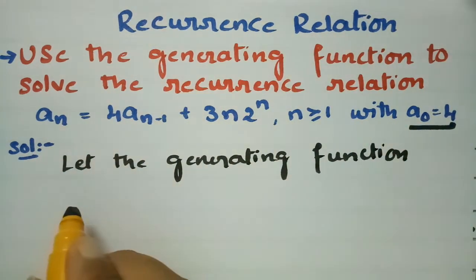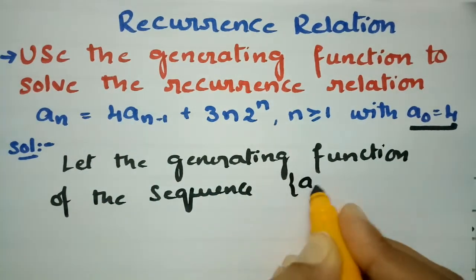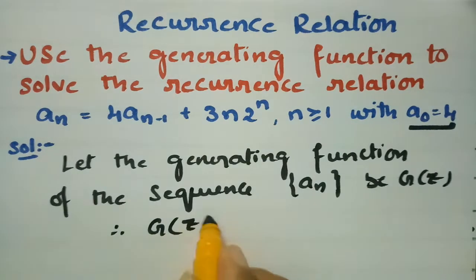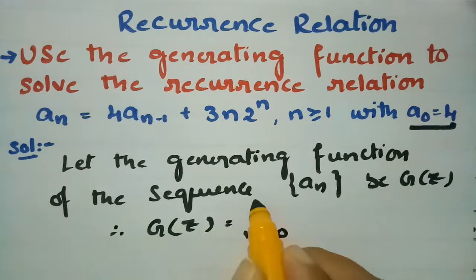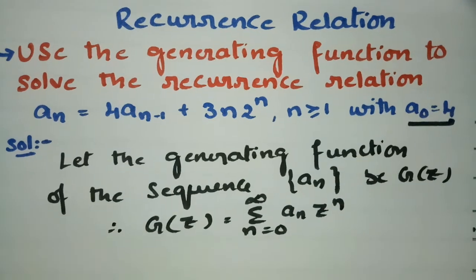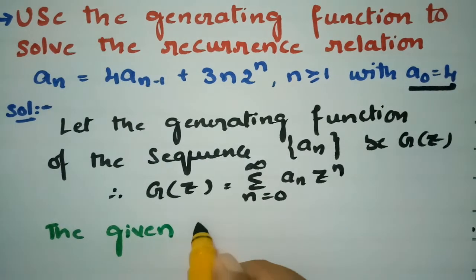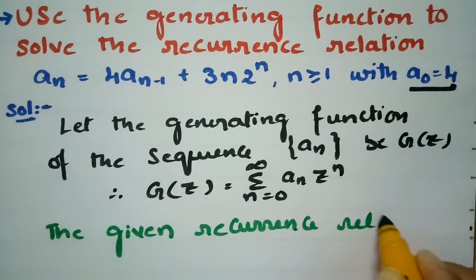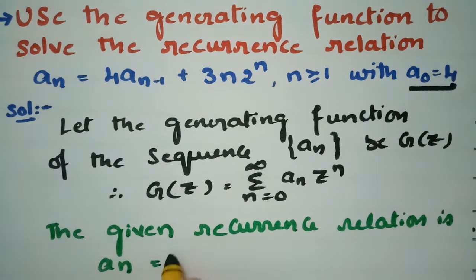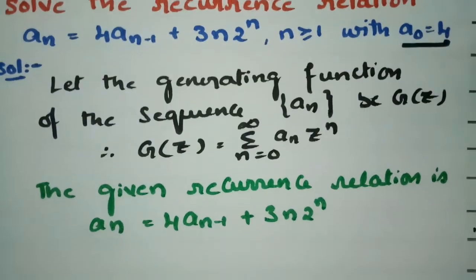Let the generating function of the sequence a_n be G(z). Therefore G(z) = Σ (n=0 to ∞) a_n · z^n. The given recurrence relation is a_n = 4·a_(n-1) + 3n·2^n.